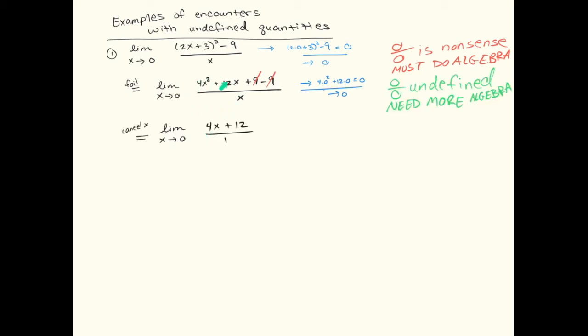Of course in this quantity here after the 9's cancel, now I can cancel an x in every single term. And I've got my quantity on the next line here which is 4x plus 12 divided by 1. Now let's plug in x equals 0. Oh, there we go. There's the answer. The answer is 12. Magic. The answer is not 0 over 0. That doesn't make any sense. The answer is 12. And the only way we could figure that out is by doing the algebra.